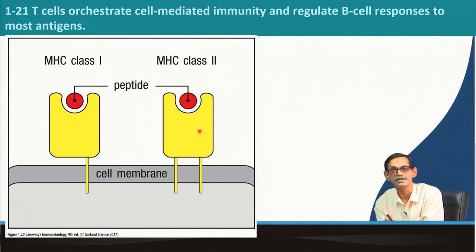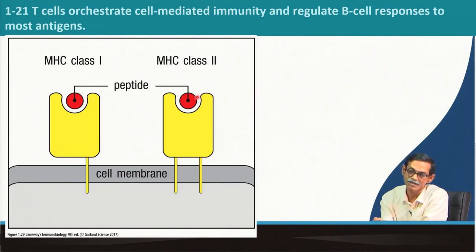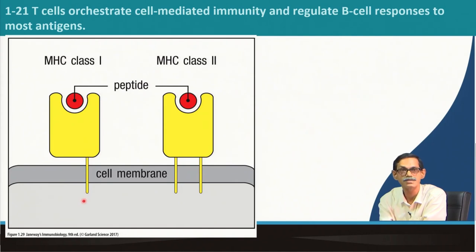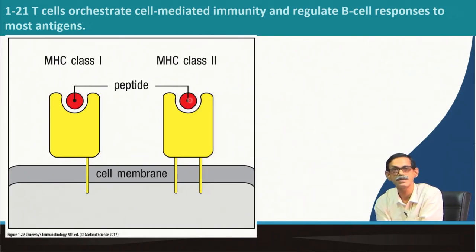There are two types of MHC: MHC class 1 and MHC class 2. Looking at this cartoon, they appear very similar, but the immediate difference is this yellow line — in MHC class 1 there is only one transmembrane domain attaching it to the cell membrane. In the case of MHC class 2 there are two transmembrane domains. The red part represents the processed antigen.